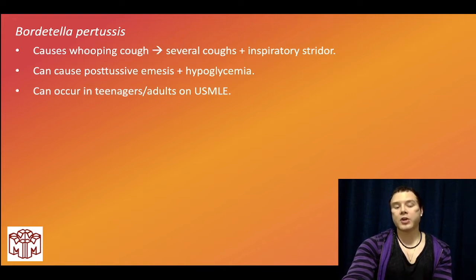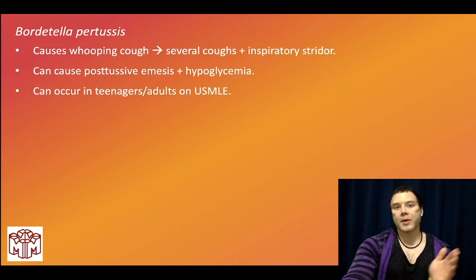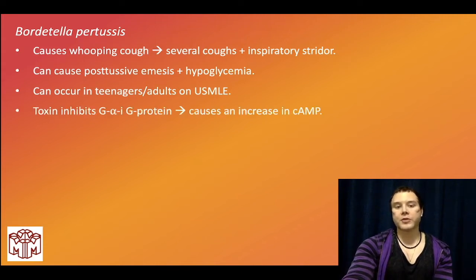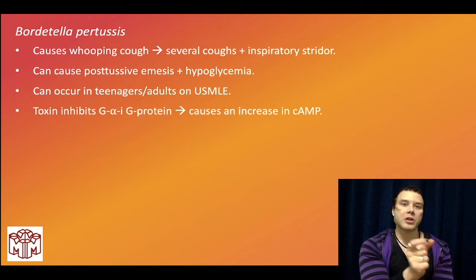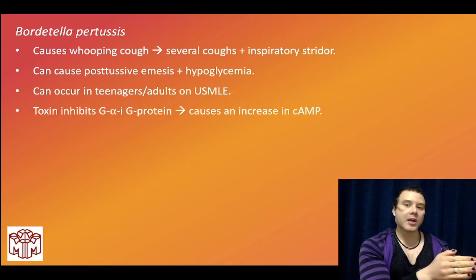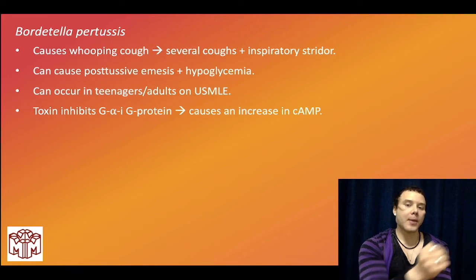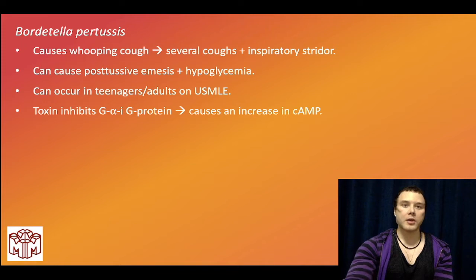Pertussis is not limited to pediatrics. They can give you a 19-year-old who has coughs, stridor, post-tussive vomiting, and hypoglycemia — that's pertussis. For Step 1, know the toxin, which inhibits G-alpha-I G-protein. If you agonize G-alpha-I, that causes a decrease in cAMP. So if we inhibit G-alpha-I via pertussis toxin, we increase cAMP.